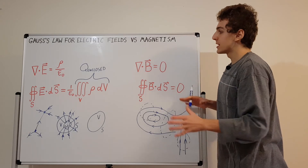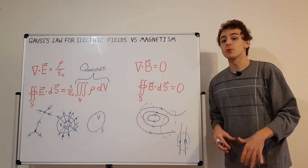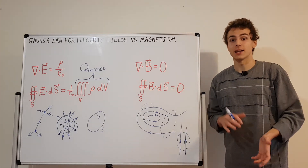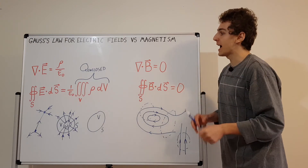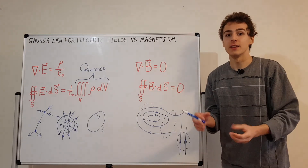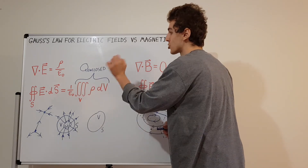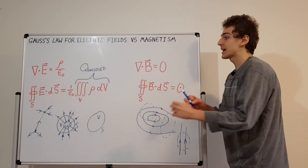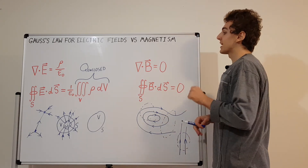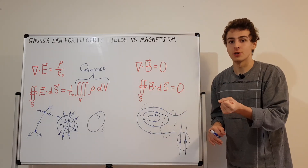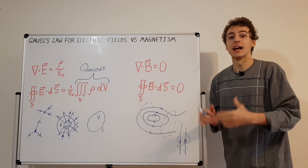The takeaway message is that Gauss's law for electric fields and Gauss's law for magnetism share many similarities. The main difference is that magnetic fields don't have a monopole charge the way electric fields do. Charge exists as the source for electric fields, but magnetic fields cannot be produced by some kind of charge — to produce magnetic fields you need currents or changing electric fields.